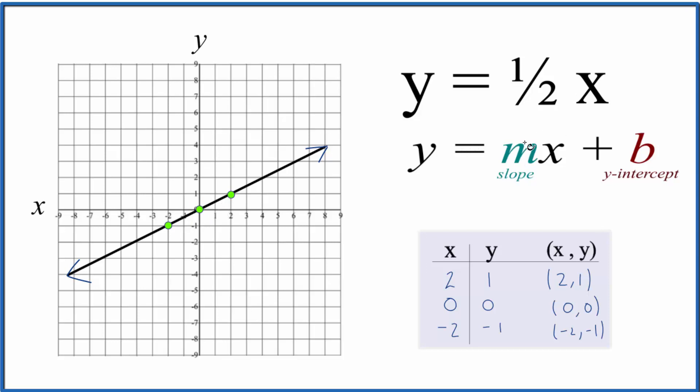We can think of our slope, m, the one-half, as rise over run. And that way, we can go to our y-intercept right here at 0 on the y-axis. We'll go up 1 and over 1, 2. That's our first point.